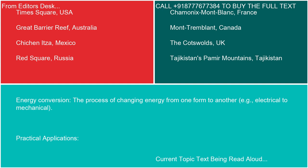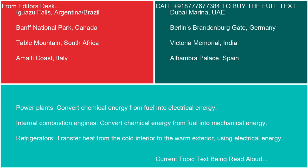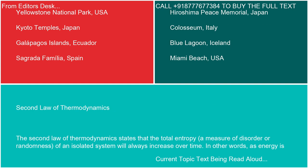Practical applications: Power plants convert chemical energy from fuel into electrical energy. Internal combustion engines convert chemical energy from fuel into mechanical energy. Refrigerators transfer heat from the cold interior to the warm exterior using electrical energy.